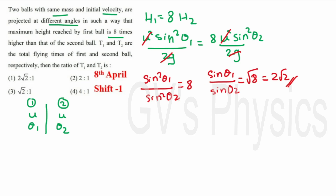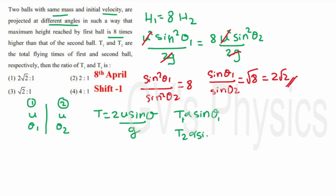To find the time of flight we use: T = 2u·sinθ/g. Since initial velocity is the same, T is proportional to sinθ. So T₁/T₂ = sinθ₁/sinθ₂ = 2√2. We check the options: the ratio is 2√2 to 1. Option 1 is the right answer.